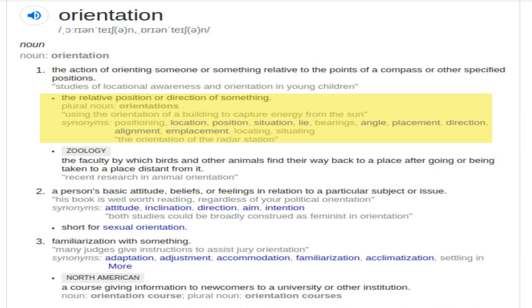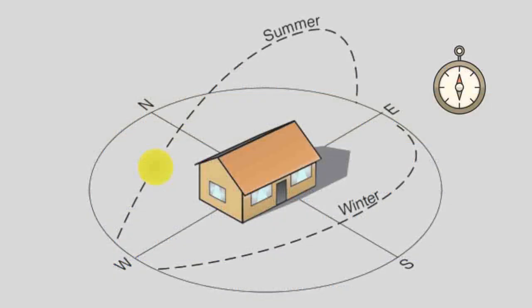That something is, in our case, a structure — an ancient monument. When we examine the orientations of ancient monuments in large quantities, we have discovered some amazing things. For example, as the yellow marked part says, using the orientation of a building to capture energy from the sun — that is of course true, but also very limited.